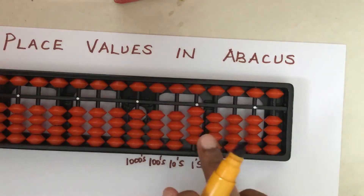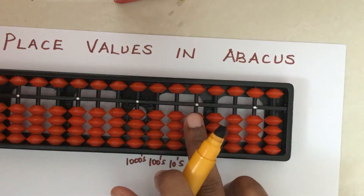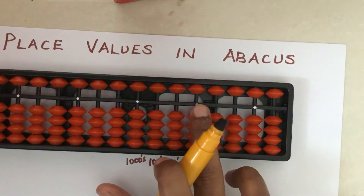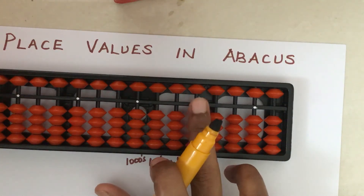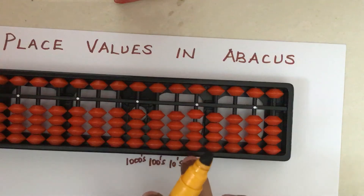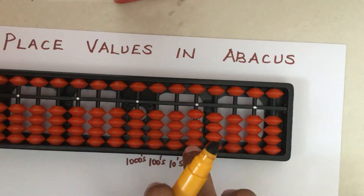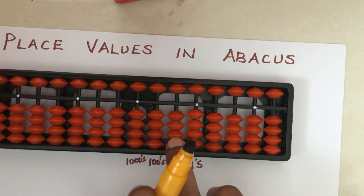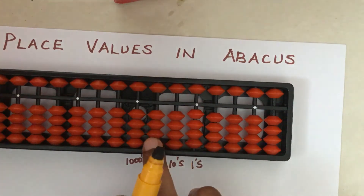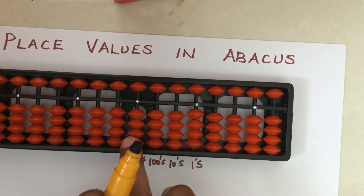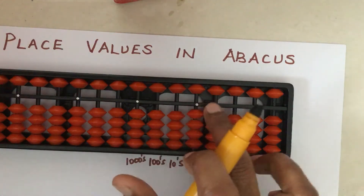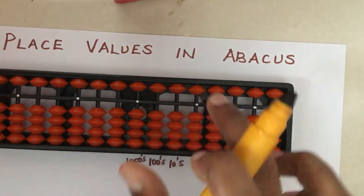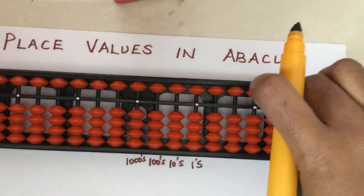Always start from the second white dot. This is the ones place rod, this is the tens place rod, this is the hundreds place rod, and this is the thousands place rod.